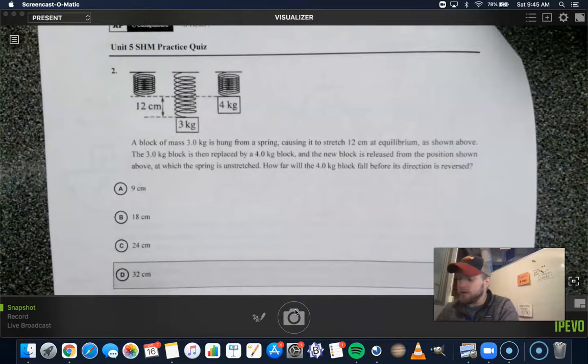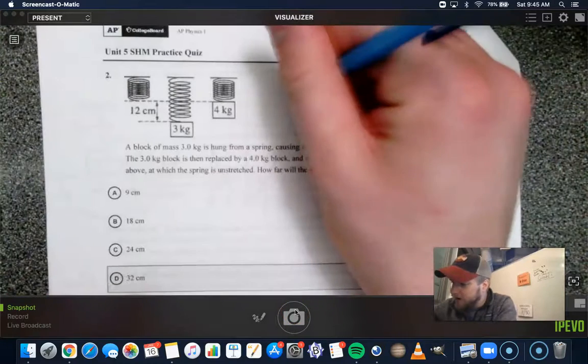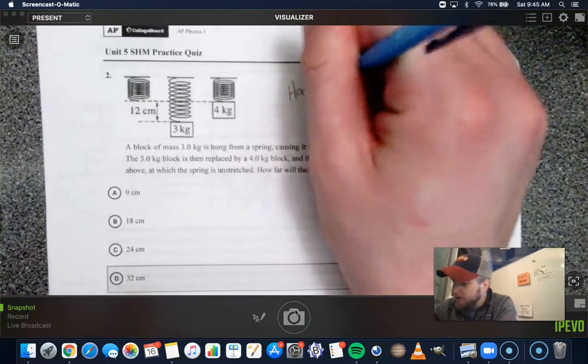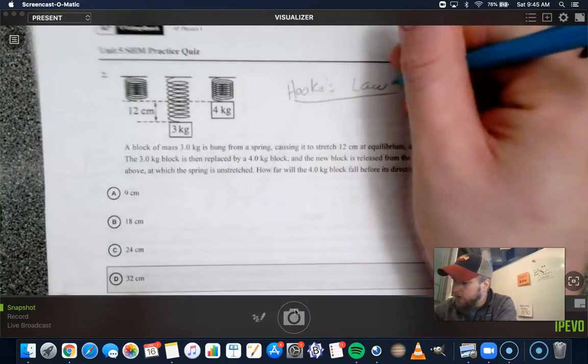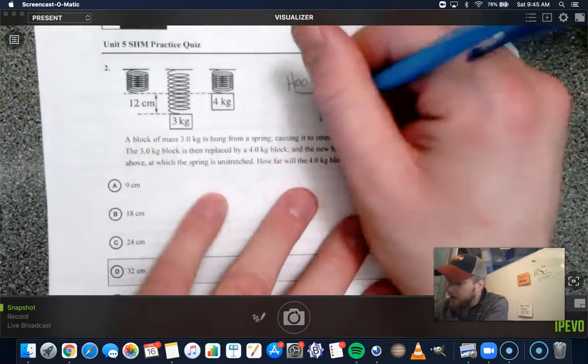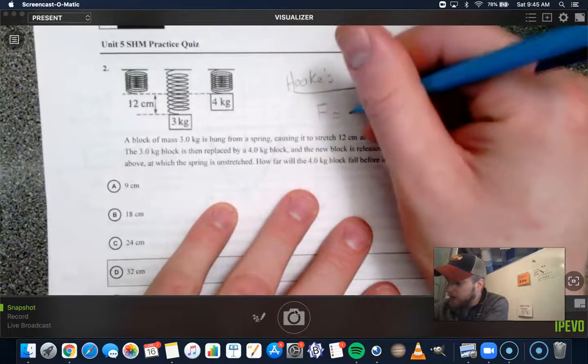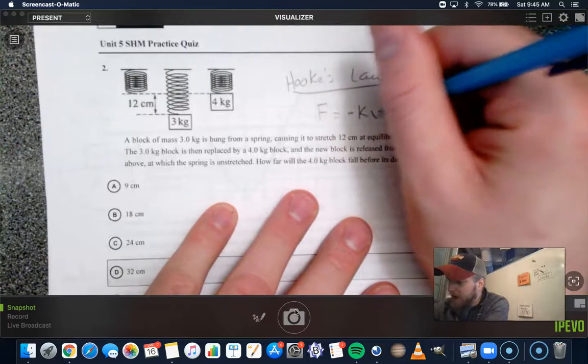Alright, number two. Number two is a question about Hooke's Law. Let's remind ourselves what Hooke's Law is all about. Hooke's Law says that the force from a spring is equal to negative kx.